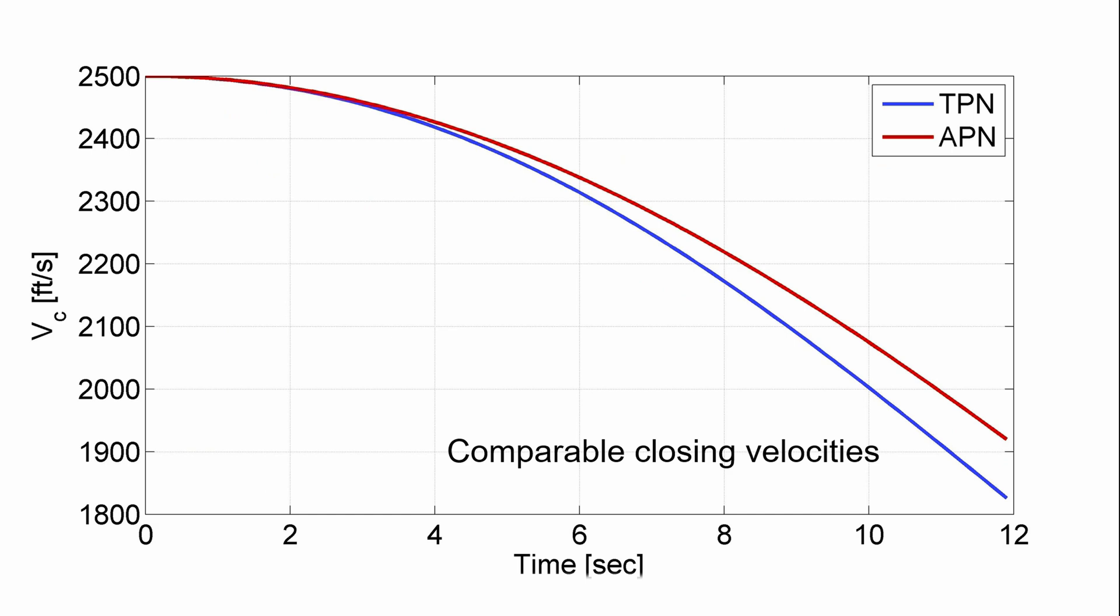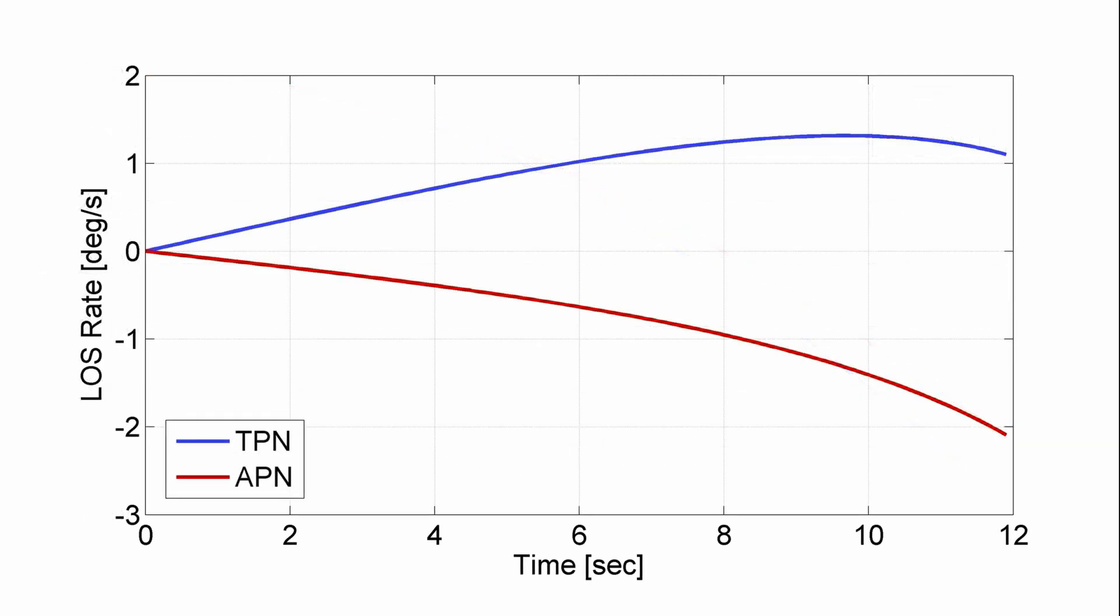Looking at the closing velocity, we see comparable values and form between both laws. The line of sight rates between the two laws are very different. Looking at true when t is not equal to zero, we see a positive line of sight rate while augmented is negative when t is not equal to zero.